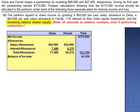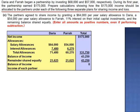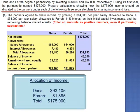This remaining amount is shared using the partners' profit and loss ratio, which in this case is equal. 50% of $43,250 is $21,625, so Daria and Farrah will each claim $21,625. For Daria: $71,480 plus $21,625 equals $93,105. For Farrah: $60,270 plus $21,625 equals $81,895. Always verify the total: $93,105 plus $81,895 equals $175,000.